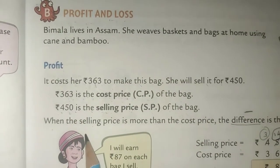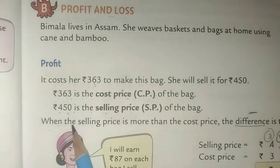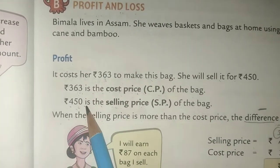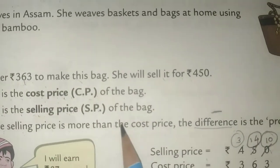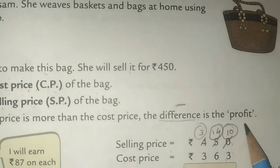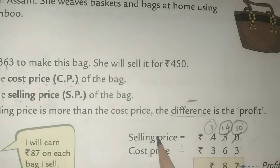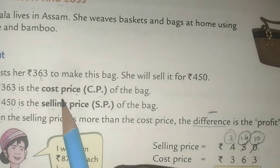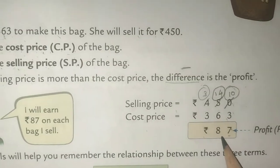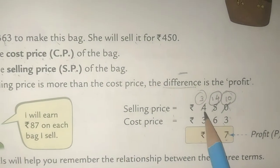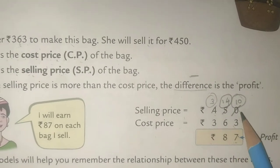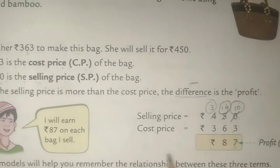One definition is given for profit: when the selling price is more than the cost price, the difference is the profit. Selling price is 450 and cost price is 363, so the difference is 87. That difference is called the profit.